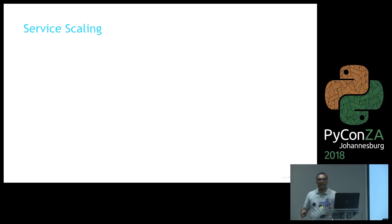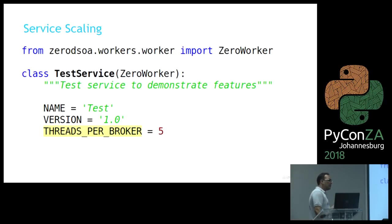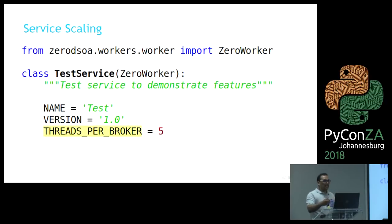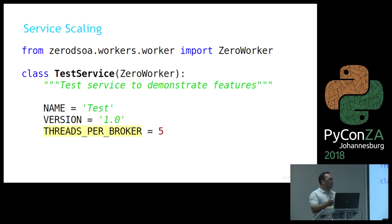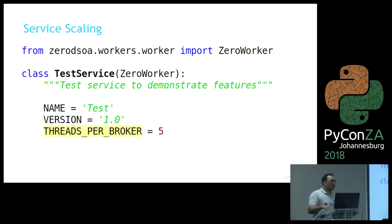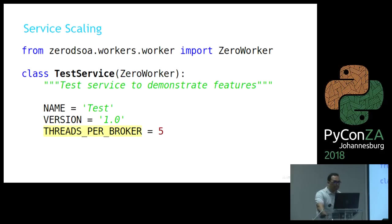Scaling services using threads is a simple property on your worker: threads_per_broker. The default is one; in this case I've set it to five. The ZeroWorker class will automatically scale your service so that when it connects to the broker, the broker sees five workers even though it's one process. You can scale via processes, via threads, or combine both.